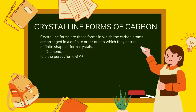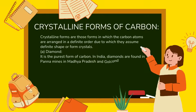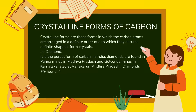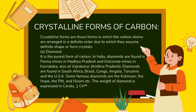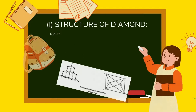Diamond is the purest form of carbon. In India, diamonds are found in Panna mines in Madhya Pradesh, Golconda mines in Karnataka, and at Vajrakarur in Andhra Pradesh. Internationally, diamonds are found in South Africa, Brazil, Congo, Angola, Tanzania, and the USA. Some famous diamonds include the Kohinoor, the Hope, the Pitt, and the Nizam. The weight of a diamond is expressed in carats — one carat equals 200 milligrams. Note: colored diamonds are called gems.